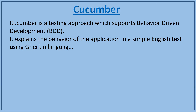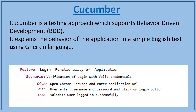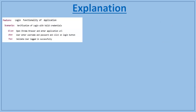The keywords — Feature, Scenario, Given, When, Then — are all written in Gherkin language. Whenever you write these test cases in this format, you save the file with the extension '.feature'. I've given the name 'myfeature.feature' and saved it in a folder called 'feature folder'. Then I have to create another file called 'steps.java', which I save in a folder called 'step definition'.